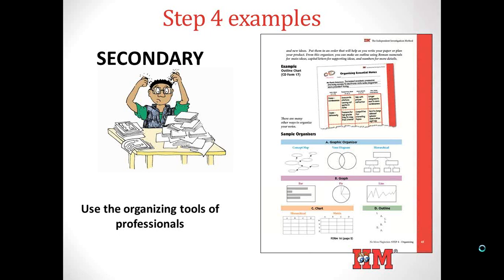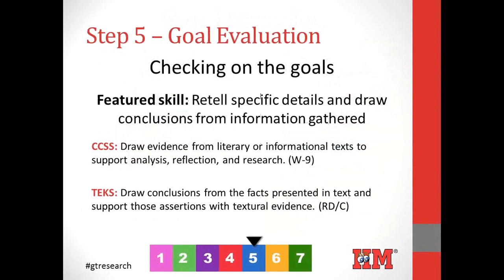When students have finished organizing, they're ready to go on to step five: goal evaluation — checking on the goals. It's still not time to jump to the paper or action product. This is the step where students look back at the process, see if the original goals set in step two have been achieved, or if there are new questions or areas needing more information. They can also reflect on the role of a researcher and set goals for future studies. It's really important to put this step in the hands of the students, not the teacher's hands. It's the motivation that comes from student-centered learning, which develops independence and self-efficacy.